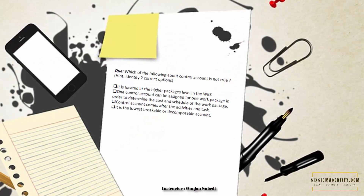Here is a question: which of the following about the control account is not true? Option one: it is located at the higher packages level in the WBS — this is true as seen in the figure. Option two: one control account can be assigned for one work package to determine cost and schedule — also true. Option three: the control account comes after activities and tasks, meaning it is the lowest decomposable level — this one is not correct.